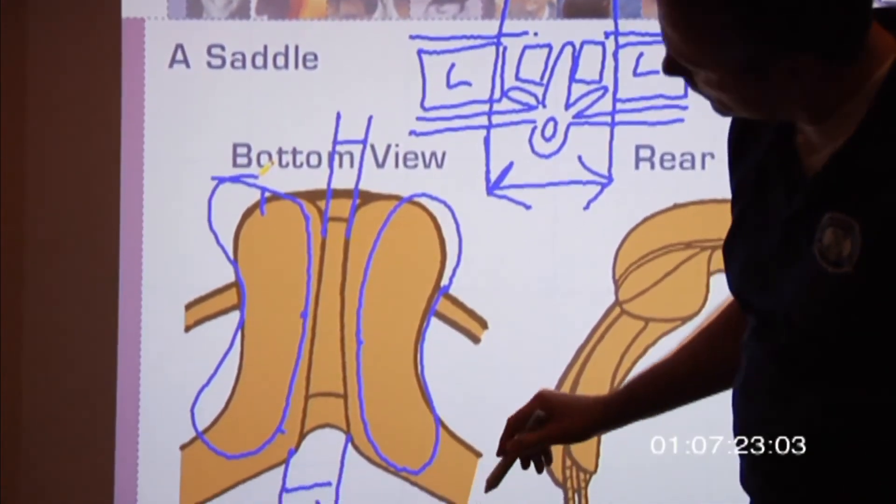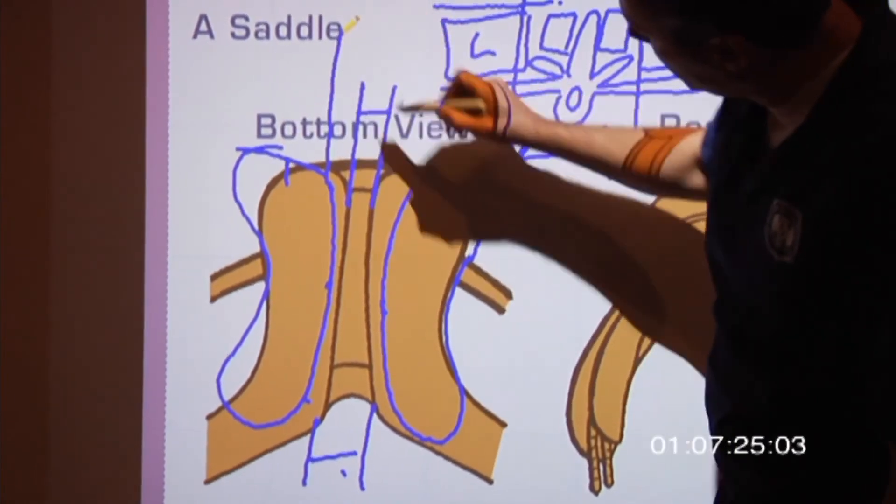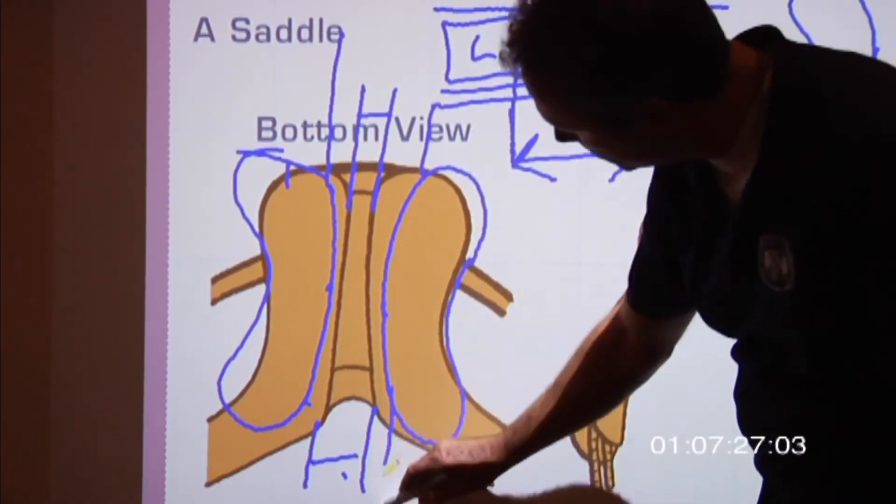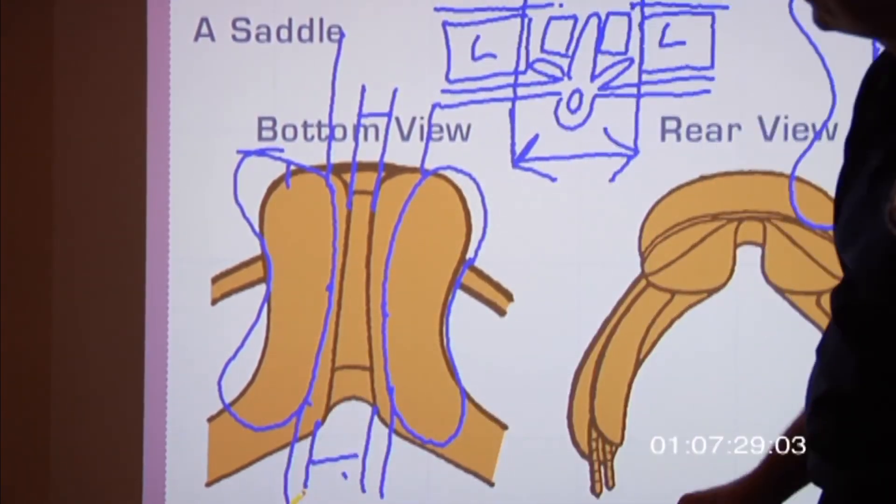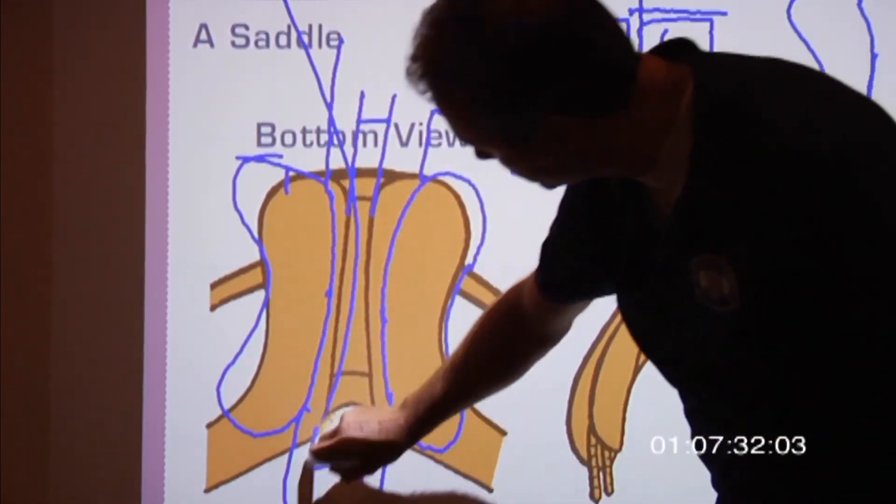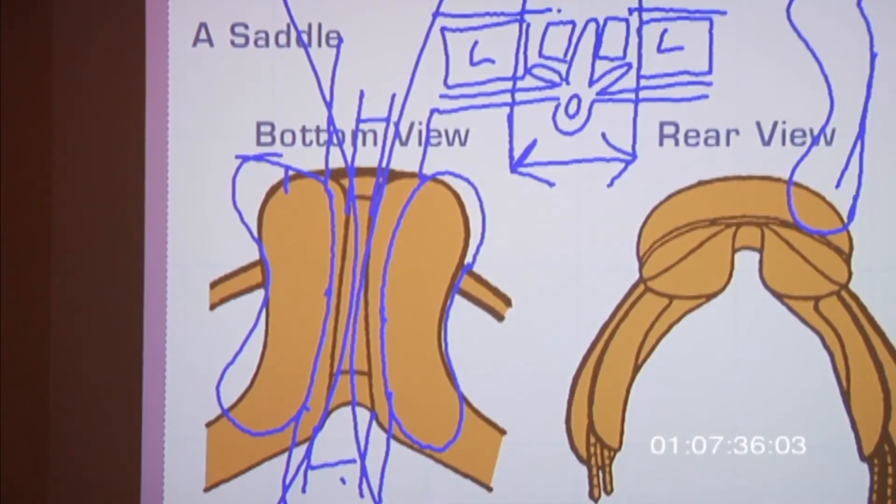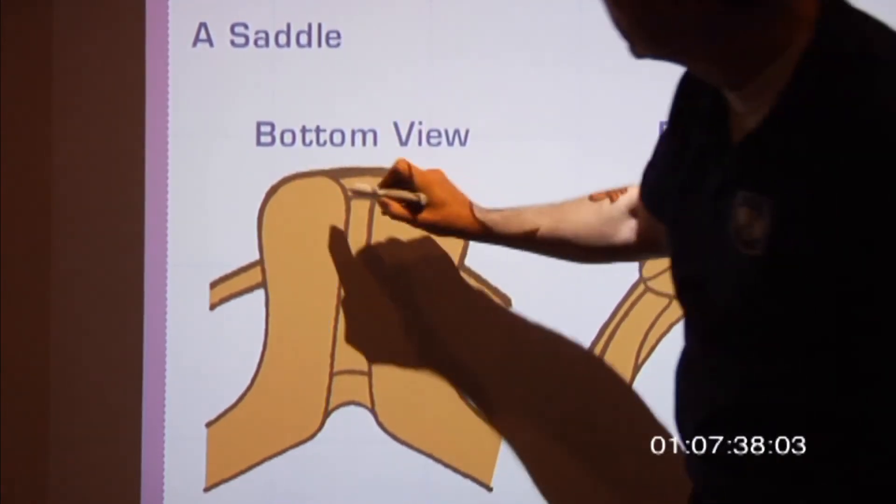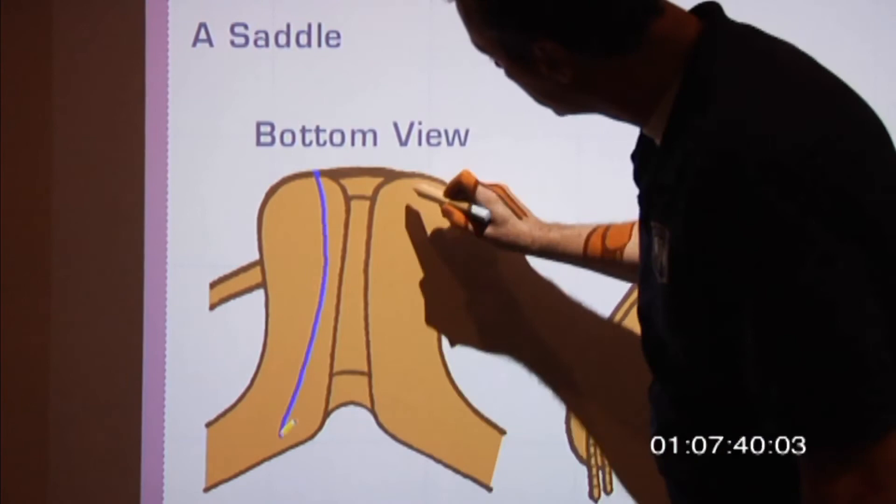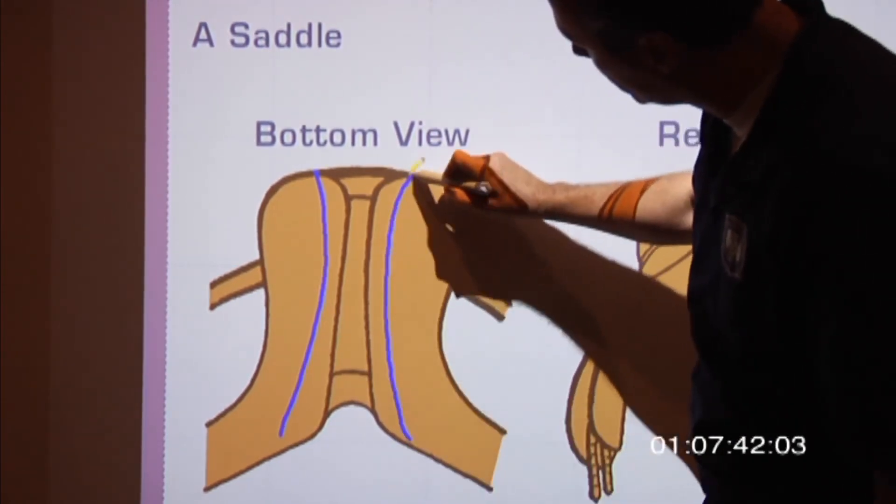So you notice we got the same space in the back as in the front. And then because the horse's spine bends when you go around the corners to the left or to the right, we have a nice clearance in the front and in the back.